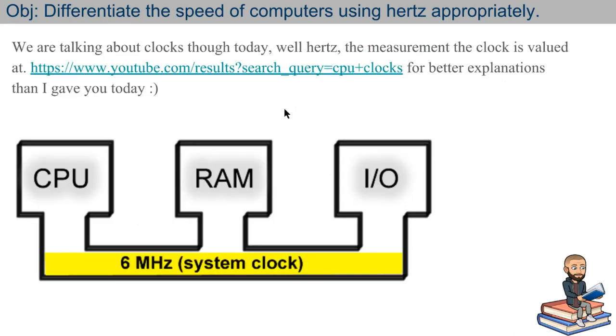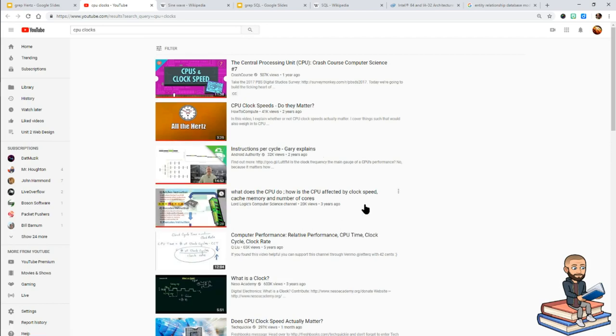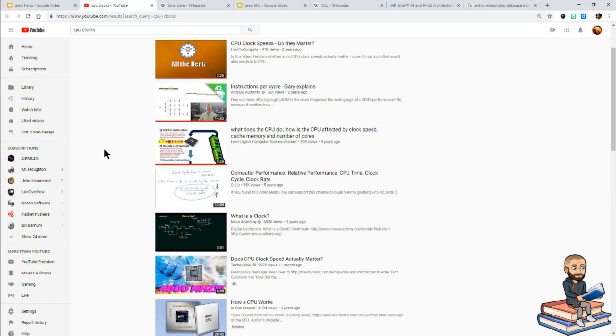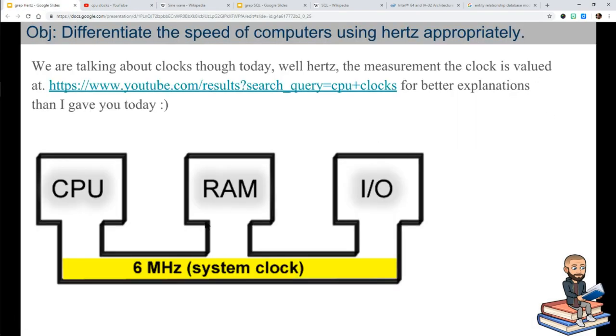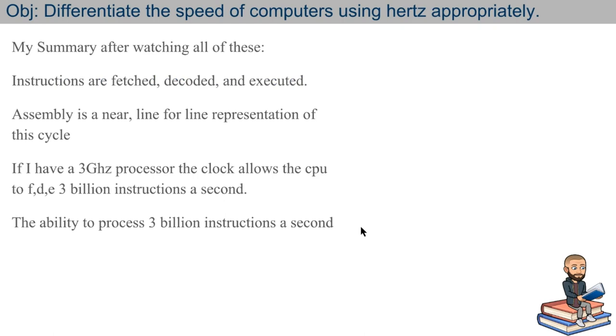But we were talking clocks today. I need to focus. The measurement of a clock is hertz. And I thought I'd show you some YouTube results because these are very helpful. As you can see by the little red lines, I've watched many of them just to make sure I can give you the most simple explanation of what hertz is. I like this visual as well because basically the clock here is allowing these three things to work together. So in summary, a computer does this type of cycle. It fetches instructions, then decodes those instructions, and then executes the instructions. You see the word instructions in every part of the cycle.